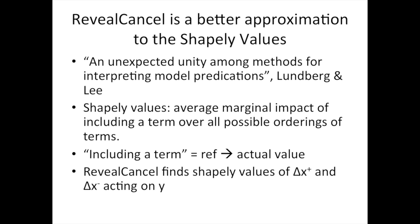It turns out that the reveal-cancel rule, which we had actually developed prior to seeing the result in Lundberg and Lee's work, can be regarded as a better approximation to the Shapley values because it is actually computing the average marginal impact of delta x plus and delta x minus on y over both possible orderings of delta x plus and delta x minus.